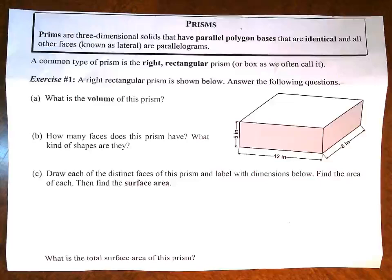So today we're going to deal with prisms. So you look above, and there's different things that you have to be aware of when you're looking at a prism. A prism, there are three-dimensional solids that have parallel polygon bases that are identical, and all other faces are known as lateral faces, and I'll talk a little bit about that, and it says that they're parallelograms. So we'll talk a little bit about that in a second.